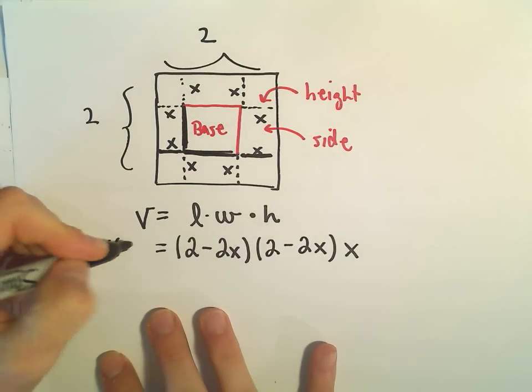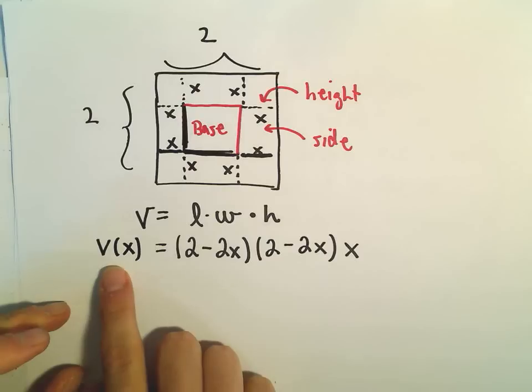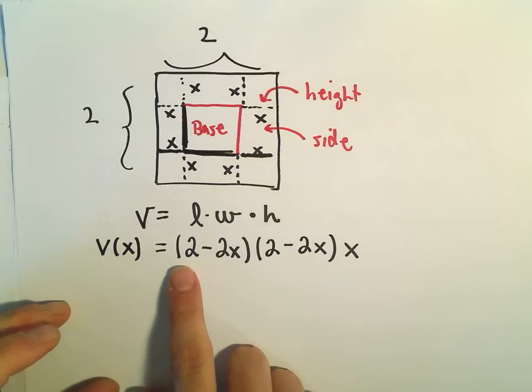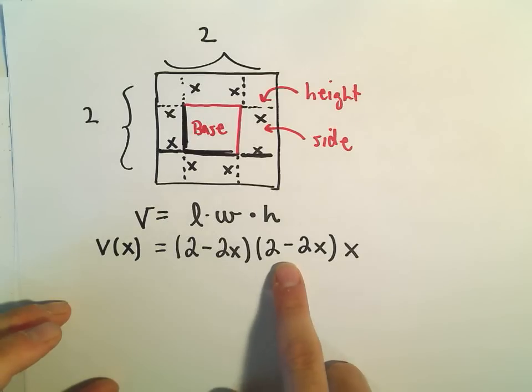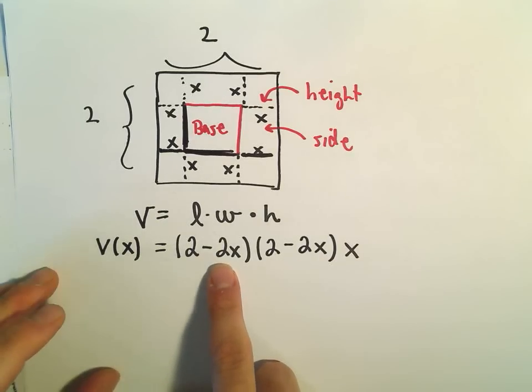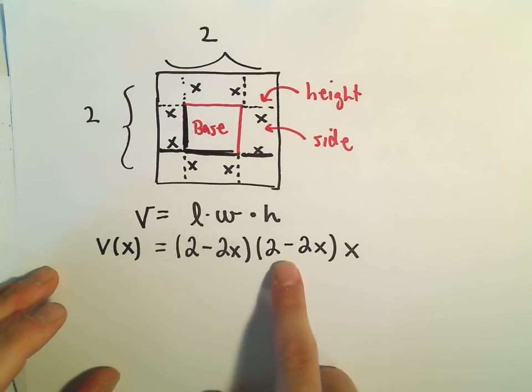The volume of this box, all in terms of x, is going to be 2 minus 2x times 2 minus 2x, and then times another x.